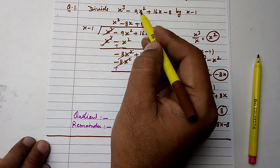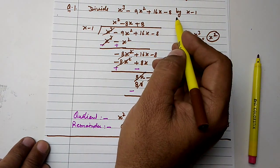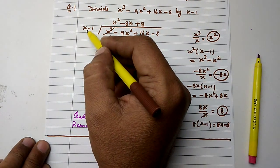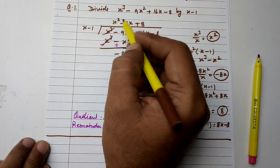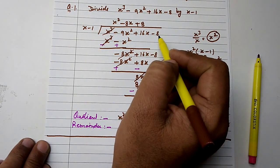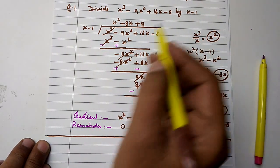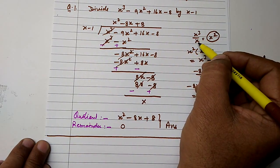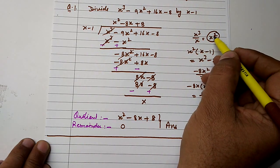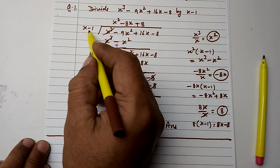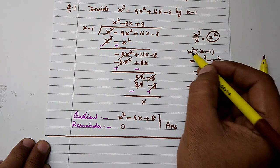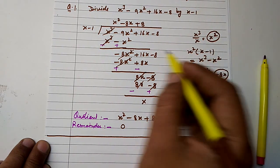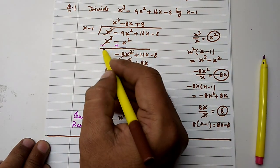Let's see this question again. We have x cubed minus 9x squared plus 16x minus 8 divided by x minus 1. We multiply x by x squared to get x cubed. x cubed divided by x gives x squared. Then x squared multiplied by x minus 1 gives x cubed minus x squared.